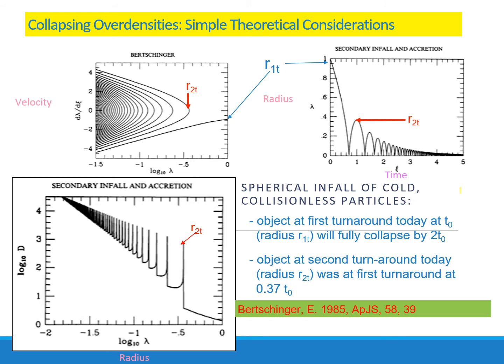In 1985, Bershinger proposed a numerical improvement over the spherical collapse model, invoking a secondary infall. It was self-similar within an Einstein-de Sitter universe, but the calculations predicted discontinuities in the density. You could also observe a first collapse and a second crossing. This was an improvement over the simplest structure formation models.